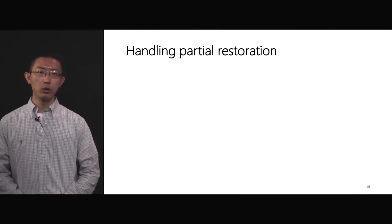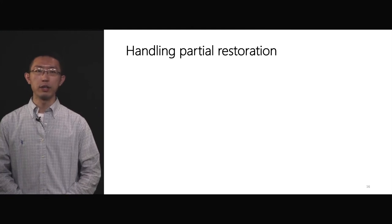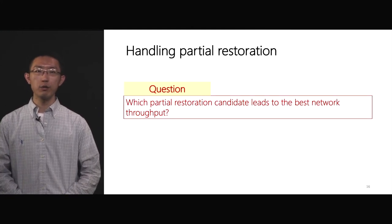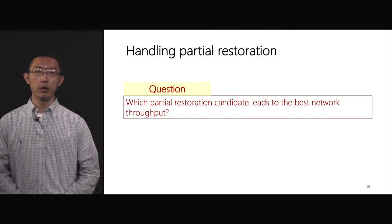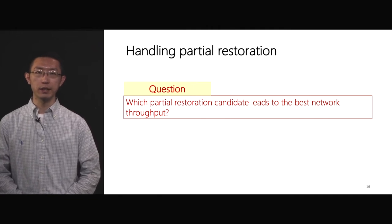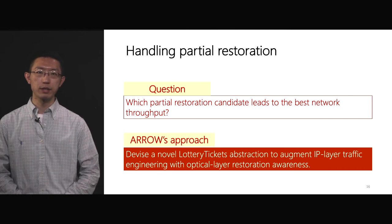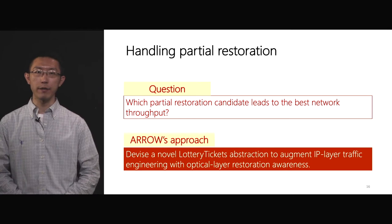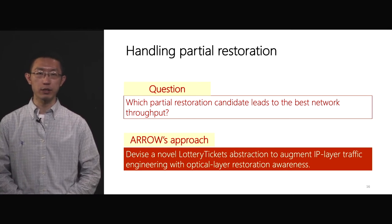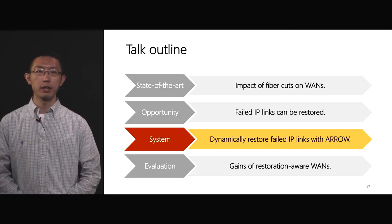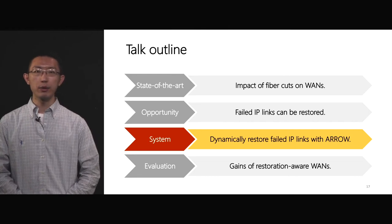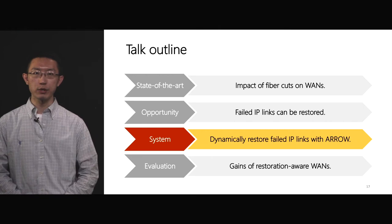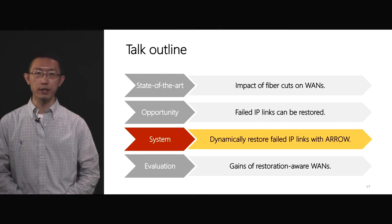Therefore, to handle partial restoration, the question is: when full restoration is not possible, which partial restoration candidate leads to the best network throughput? In response, Aero devises a novel lottery ticket abstraction to augment IP layer traffic engineering with optical layer restoration awareness. In the following slides, I am going to present the Aero traffic engineering system that dynamically restores failed IP links under fiber cut scenarios.